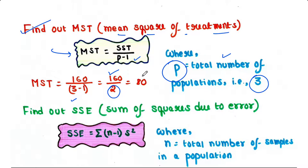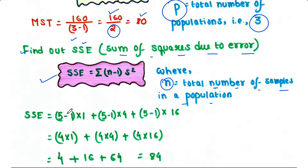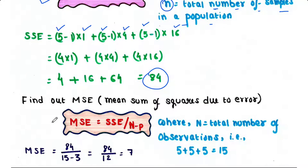Next step is to find out SSE, that is sum of squares due to error. The formula to find out SSE is this. Here n is the total number of samples in a population, so in all three cases n is 5. And S squared we have already calculated, so the SSE is equal to 84.